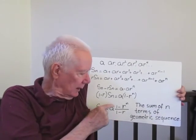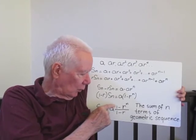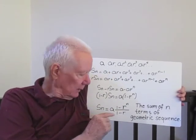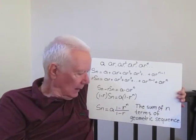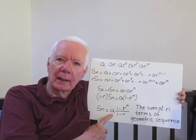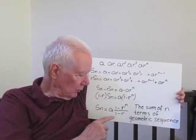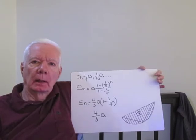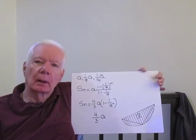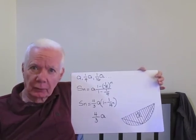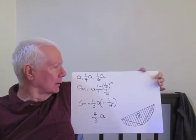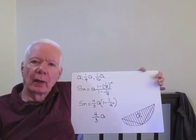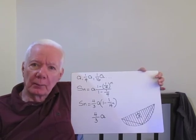And we get the formula for the sum of n terms of a geometric progression. It's a fraction with one minus R to the n in the numerator and one minus R in the denominator, and that fraction is in turn multiplied by the first term in the sequence, A. In our discussion of the parabolic segment, where we continually inscribe triangles, we encountered the numbers A, one-fourth A, one-sixteenth A, and so on, and notice that they form a geometric progression.